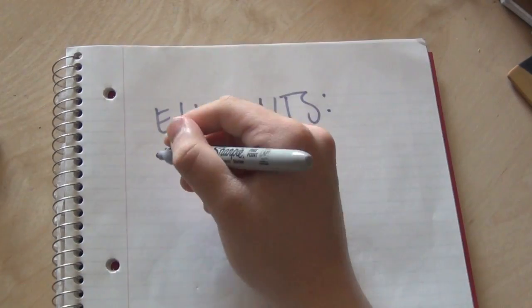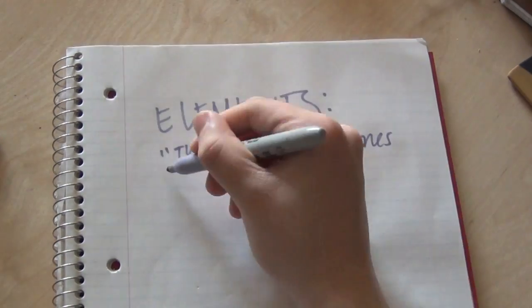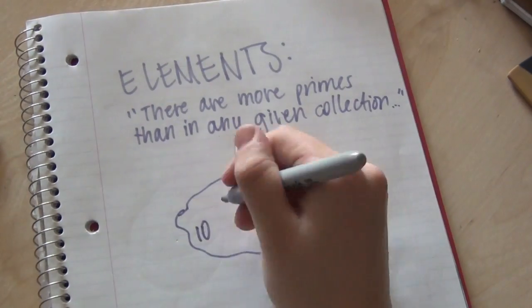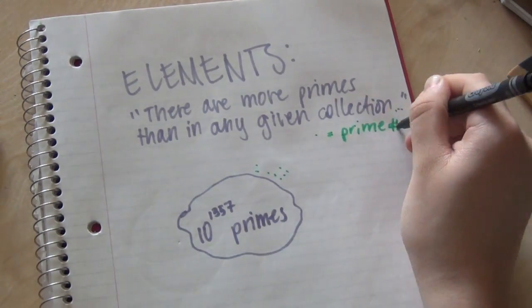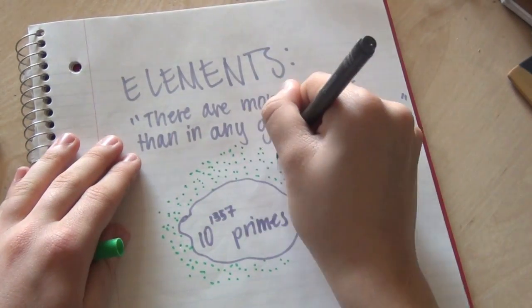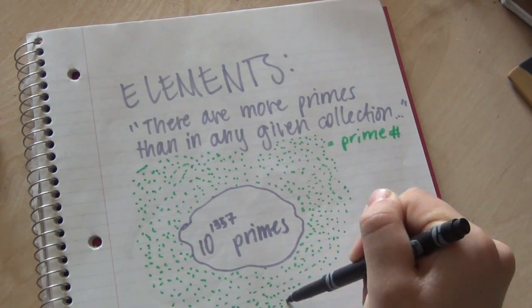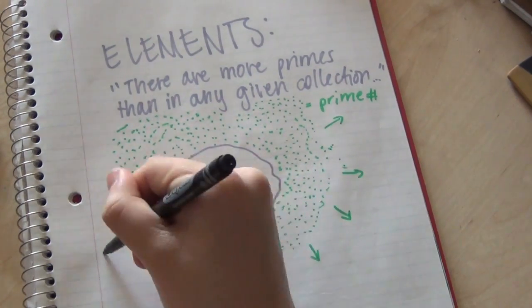For example, in his textbook Elements, Euclid could avoid saying there are infinite primes by saying there are more primes than in any given collection. So in a collection of 10 to the 1,357th power of primes, there are always more primes. So it's sort of like infinity, a proto-infinity.